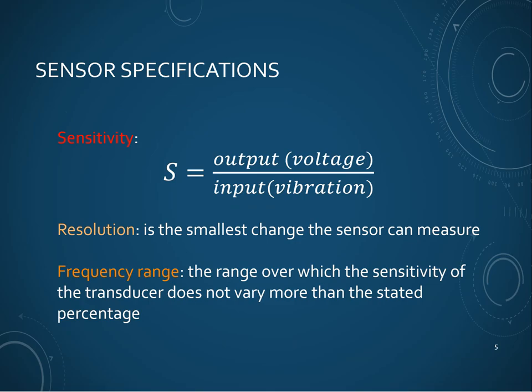In the sensor and data acquisition world, whenever you acquire a new sensor device, these devices come with data sheets that have many specifications. Common specifications include sensitivity, resolution, and operational frequency range. Sensitivity is a calibration factor between the measured output voltage and the input vibration — which could be accelerations, velocities, or displacements. Resolution is the smallest change that a sensor can measure. Frequency range is the range over which the sensitivity of the transducer does not vary more than a stated percentage; outside that range, environmental factors such as temperature can change the sensitivity significantly.